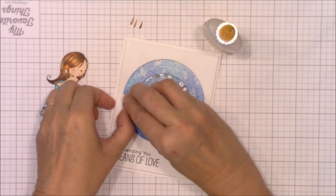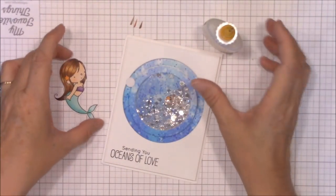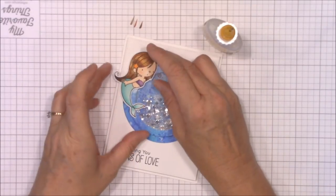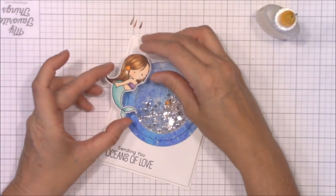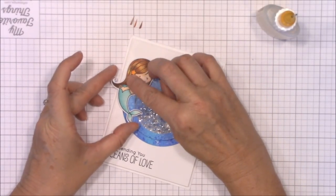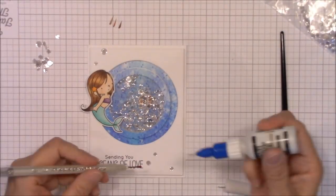Now pop that assembled slider element into the outside slider channel. Don't force it. It should just pop right into place. Once you're sure it's in place, add another small dot of glossy accents and position the mermaid on top. Hold it there to allow the glue to set.